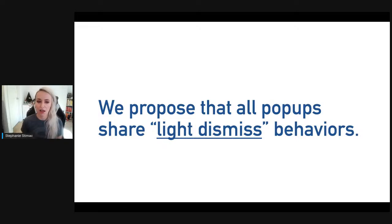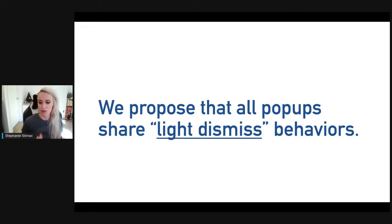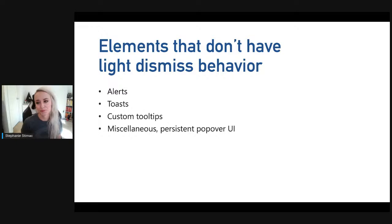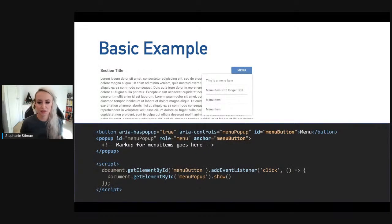The key differentiator for a popup element from other aesthetically similar elements is what we call 'light dismiss' behavior: the popup will automatically be hidden when the user hits the Escape key, layout of the popup or its anchor element is changed, or focus moves outside of the popup and its anchor element. This light dismiss behavior is currently being discussed in the Open UI standards group. Elements that don't have this behavior include alerts, toasts, custom tooltips, and other persistent popover UI.